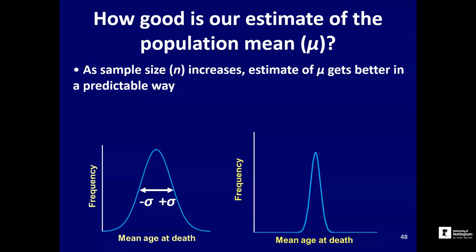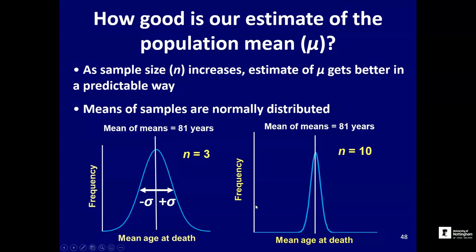Because normal distributions follow a predictable mathematical formula, we can understand exactly how our confidence in the mean increases with sample size, as long as the underlying population is normal or Gaussian. If we plot the distribution of sample means, we get an interesting phenomenon. Taking three individuals at random repeatedly and building up a distribution of estimated mean ages at death, we get a bell curve centered very close to the true underlying population mean of 81 years. Each sample is different — there's variation — so occasionally we get a very high mean and occasionally a very low one. With small sample sizes there's quite a lot of variation.